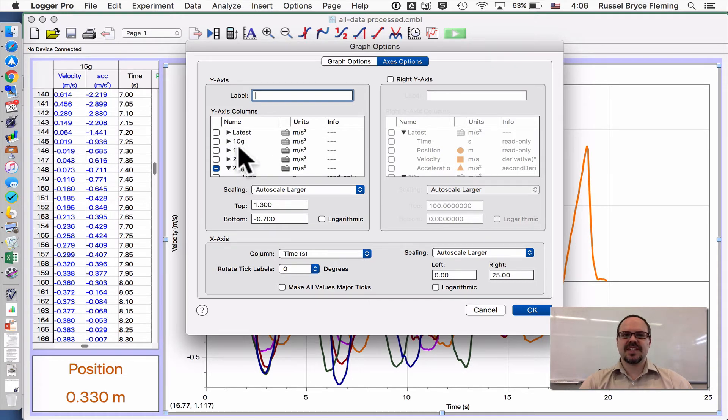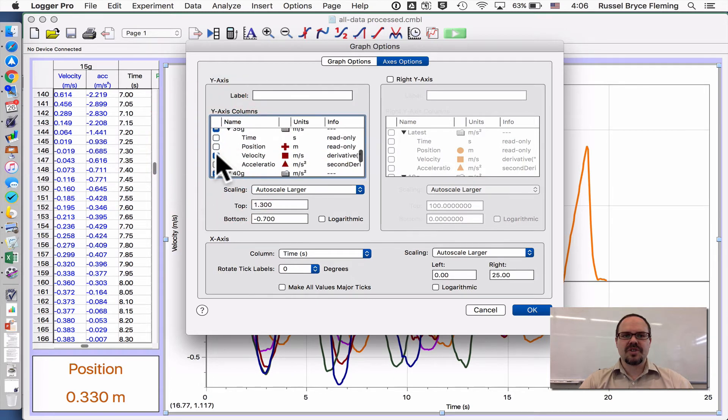I've named each of my runs 10 grams, 15 grams, 20 grams, 25 grams, etc. So I need to go through and turn off the velocities of the ones I do not want to see. So I'll turn off every one, and I'll just leave one on. This is the orange color, so we'll see the orange color still here.